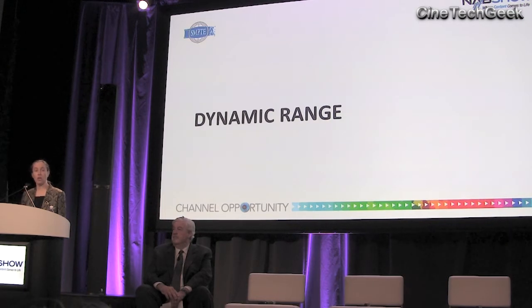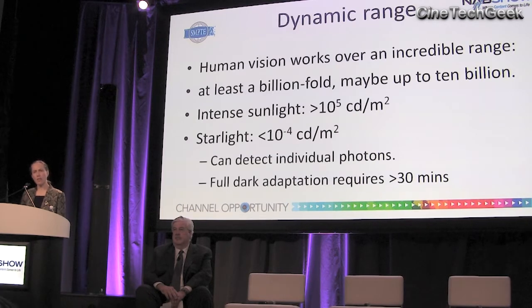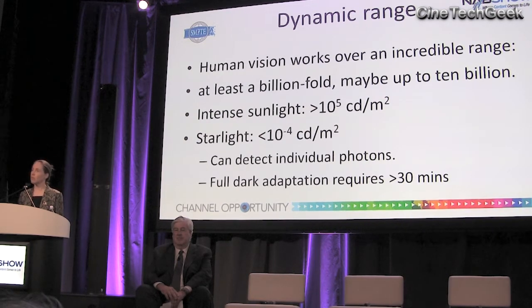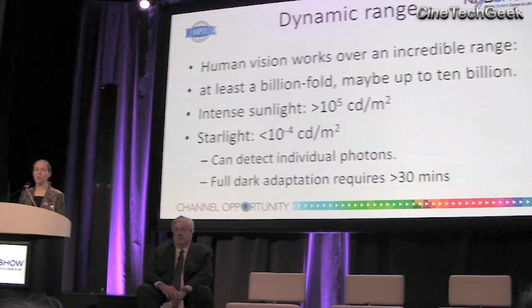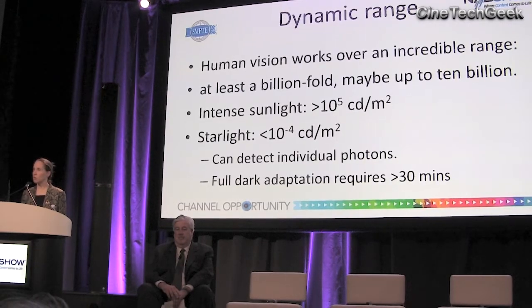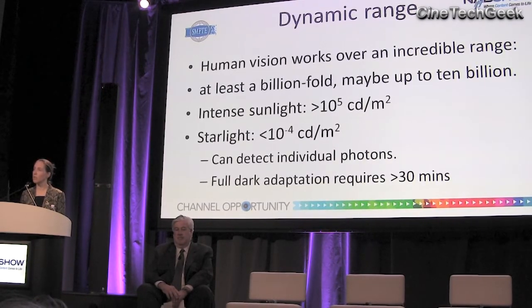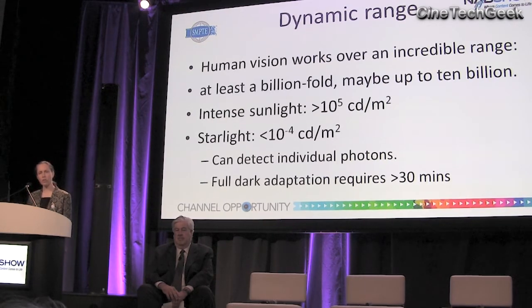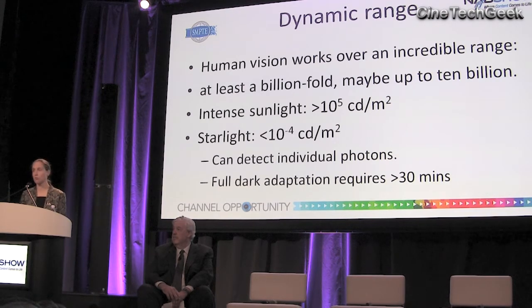Moving on to dynamic range. The dynamic range of human vision is astounding — depending on who you talk to, it's at least a billion, maybe up to 10 billion, ranging from intense sunlight right down to starlight — about nine orders of magnitude. When fully dark adapted, we can actually reach perfect quantum efficiency and detect individual photons entering the eye, which is quite remarkable. That does require at least half an hour to adapt fully — we've all had the experience of walking into a darkened room and at first seeing nothing, but after some minutes being able to make out furniture and move around quite well.